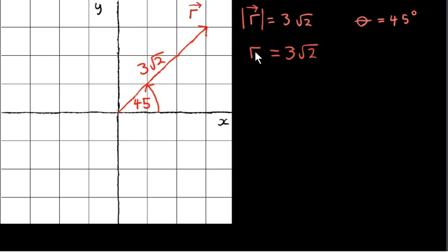So we will use this notation more often. Theta is the symbol that's often used for the angle measured anti-clockwise from the positive x-axis to the vector.